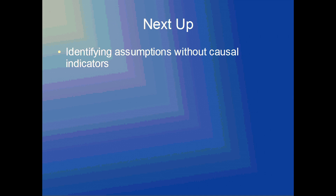Next up, I'm going to go over identifying assumptions without using causal indicators. When I say assumptions, I'm referring specifically to categorical assumptions, and the next video will depend on a video I've done in the past on identifying cause and effect without causal indicators. So I'm going to show you how not to rely on those causal indicators to identify assumptions. That's what I'll do in the next video. Thank you.